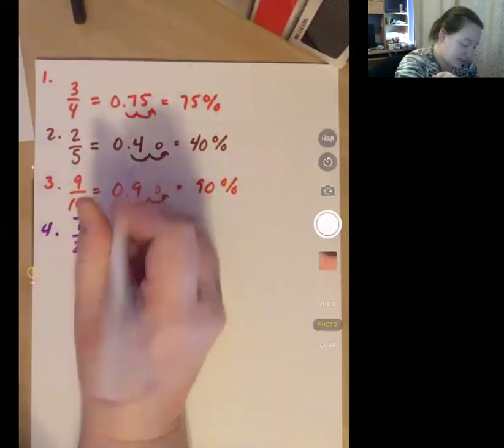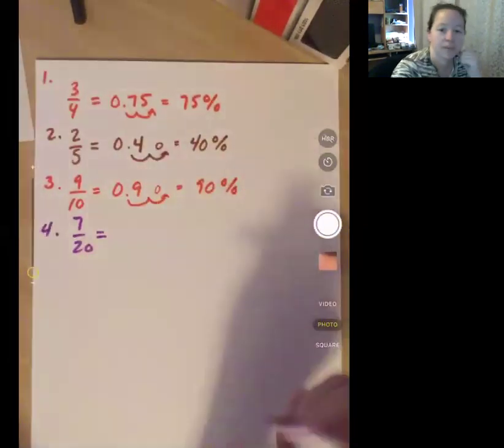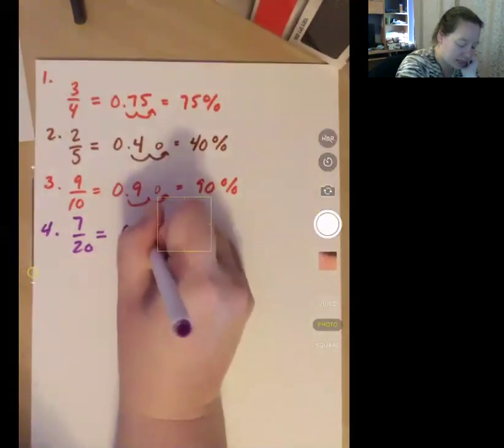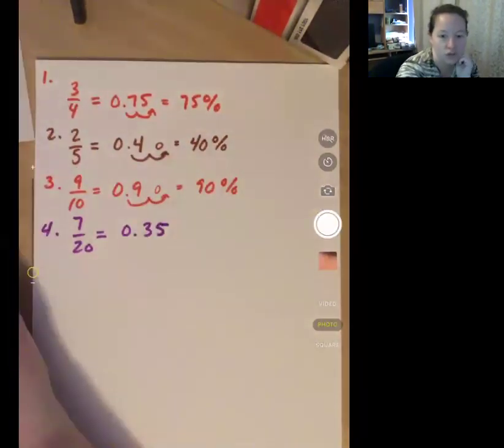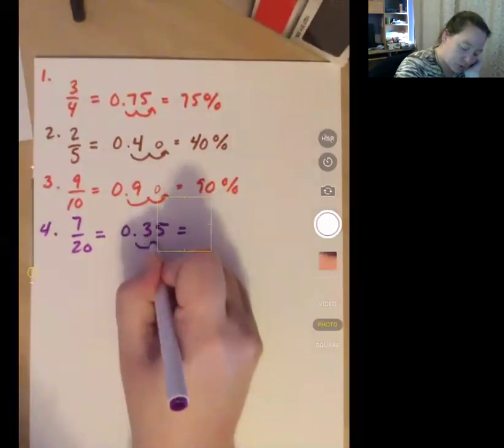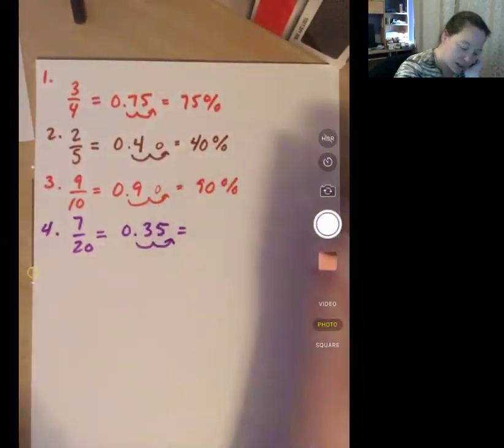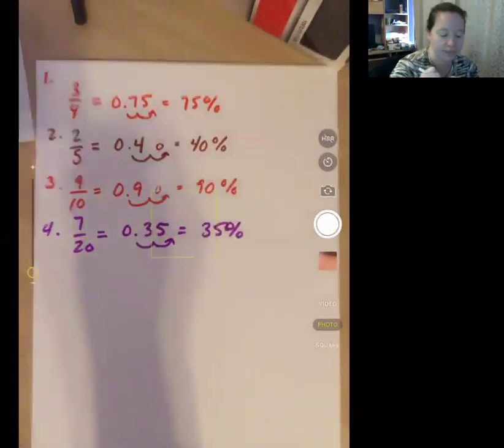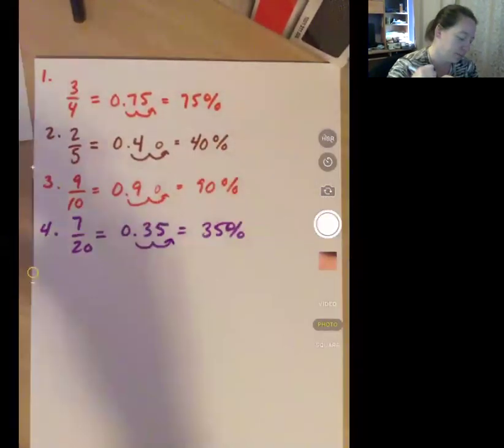Number four, 7 twentieths. 7 divided by 20. If you plug it into your calculator, you will get 35 hundredths as your answer. I move it over two times and that becomes 35%.